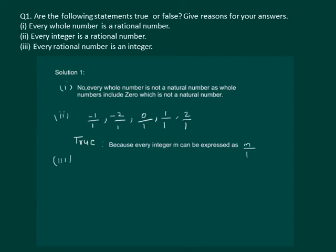Now the third part of the same question states: every rational number is an integer. We will answer that the statement is false, because 1 by 2 is not an integer, but it is a rational number.